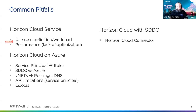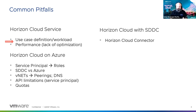Others already have an existing SDDC and want to leverage Horizon Cloud on top of it. Some haven't decided and are investigating everything — always investigate all options and figure out which fits best for your use cases. Networking is also a common challenge — often a misconfiguration where people forget to do peerings between VNets. VNets are like virtual switches in vSphere. Peering means connecting multiple VNets together.